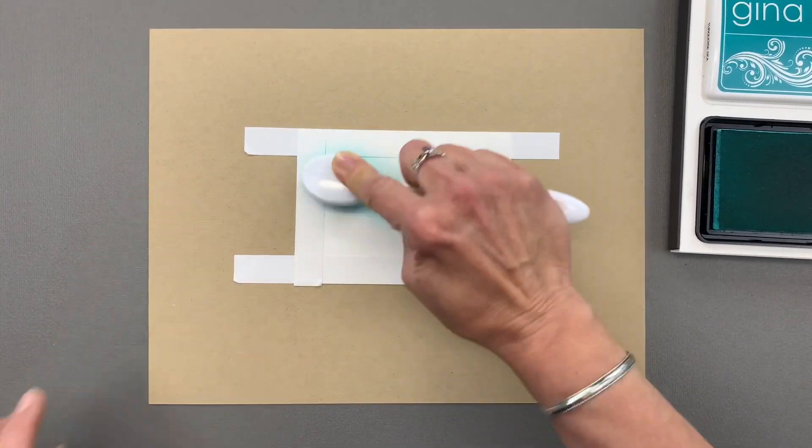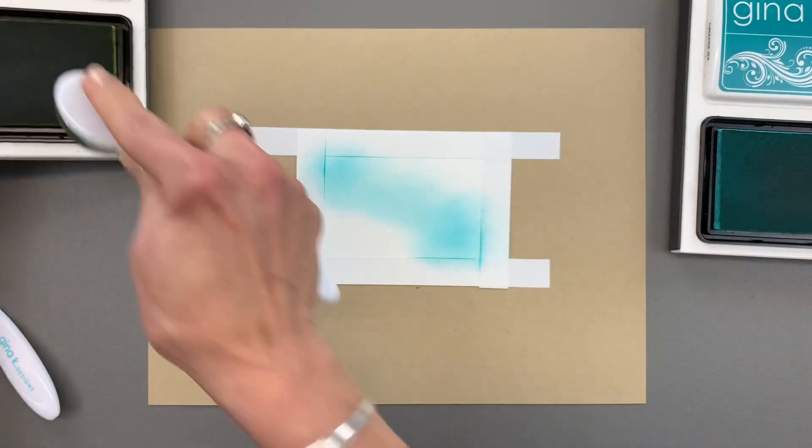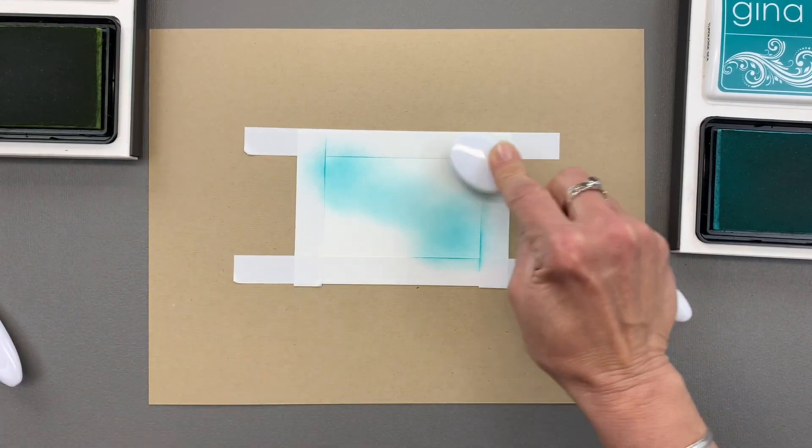Then I'm going to use my second color which is Jelly Bean Green and I'm going to work my way down from the opposite corner down to this bottom corner.